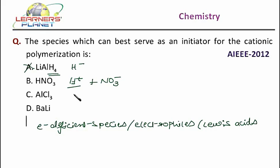Now AlCl3, aluminium chloride, it is a Lewis acid. That is an electron deficient species. So which will start the cationic polymerization? Aluminium chloride.